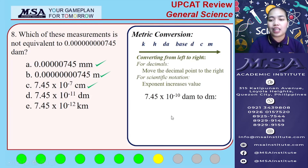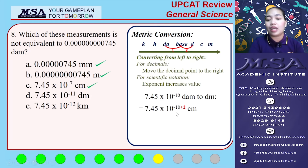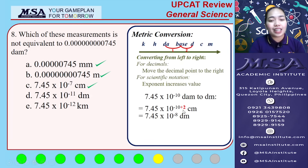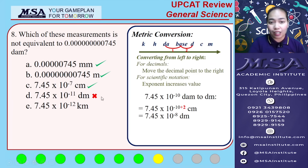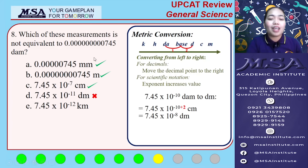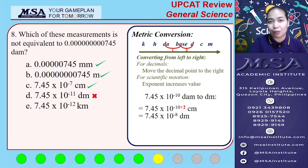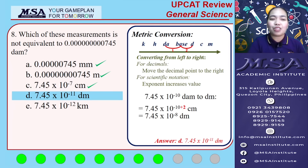Converting decameters to decimeters, we increase the exponent value by two. As you can see, letter D is not similar to our supposed answer — letter D is not equivalent to our given. That means we don't need to convert decameters to kilometers; we can save time. The answer for number 8 is letter D.